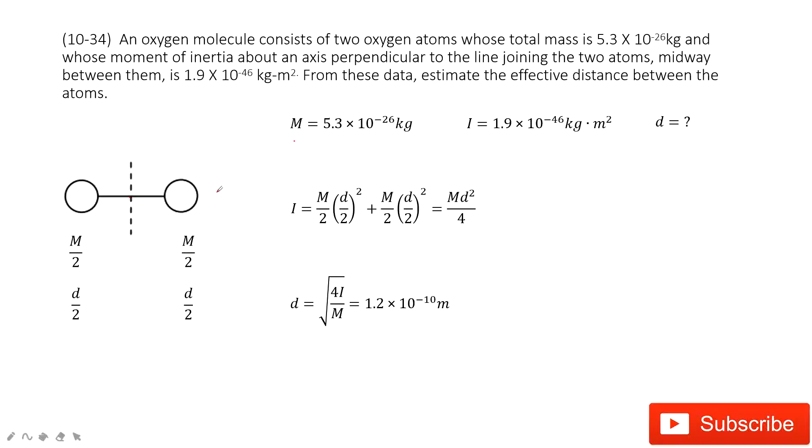And also, the moment of inertia for this system is given. It just rotates at the middle point. So that means this distance is D divided by 2. This distance, D divided by 2, because it's in the halfway, right?